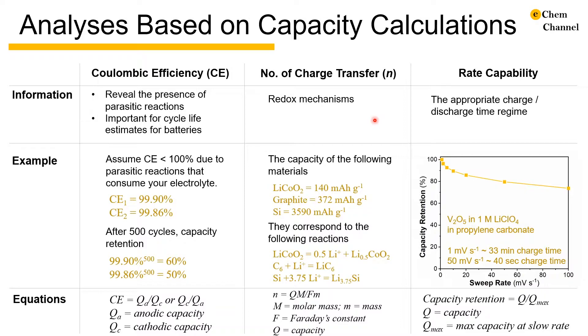The number of charge transfer per formula unit is calculated based on Faraday's law of electrolysis. In ion insertion or conversion reactions, it tells us how many electrolyte cations are participating in the reaction and the extent of redox in the electrode material.